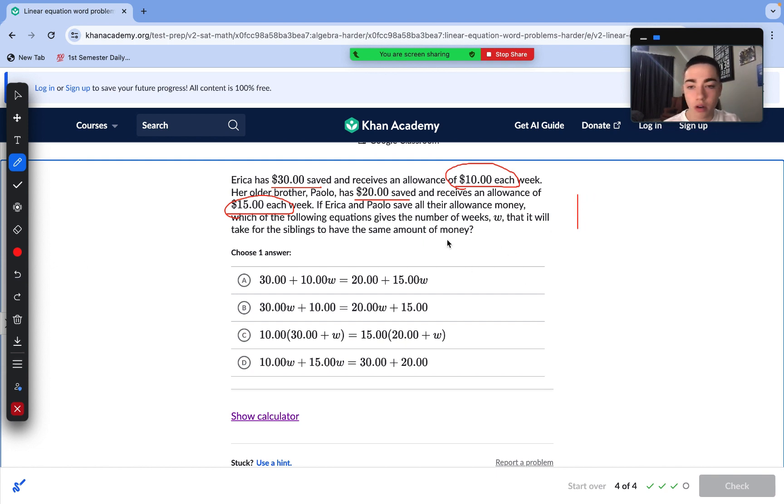Y. We don't know the total value yet. Y. Then, we start with $30. That's our initial amount. That's our Y intercept. Then, $10 each. That means 10 is our slope. So, Erica's equation is Y equals 10X plus 30. Then, Paolo's equation.